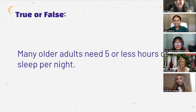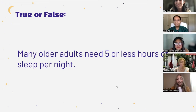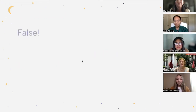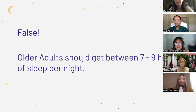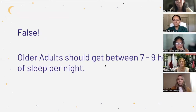The majority of you said false, and it is false. According to the National Institute of Aging and the National Sleep Foundation, older adults should get between seven and nine hours of sleep per night.